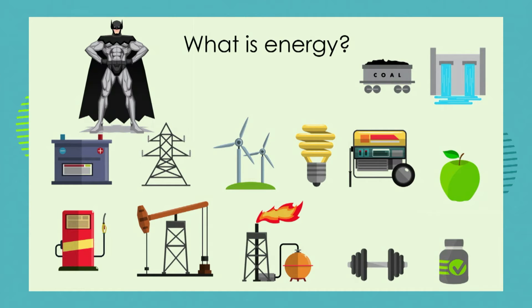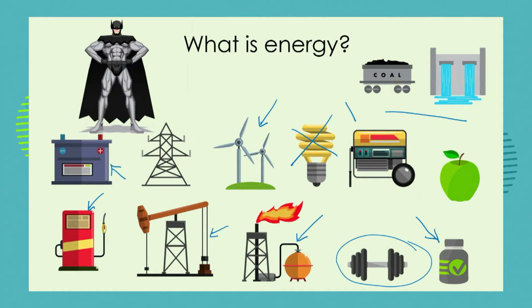I hope I've got your brain doing a little bit of aerobics now, and you're starting to think about how we use the word energy so easily in our everyday language — but what does it actually mean? Have a look at these pictures: we've got coal, a hydro scheme, a wind farm, windmills, a car battery, and petrol from oil and gas. Where's the energy when we go to gym or take an energy supplement, or when we use a generator during load shedding? And when you're hungry and you eat an apple — where's the energy?